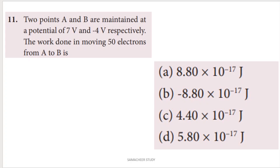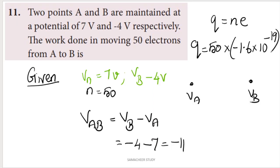Question 11: Two points A and B are maintained at a potential of 7 volts and minus 4 volts respectively. Find the work done in moving 50 electrons from A to B. We identify: Va equals 7 volts, Vb equals minus 4 volts, and number of electrons n equals 50.